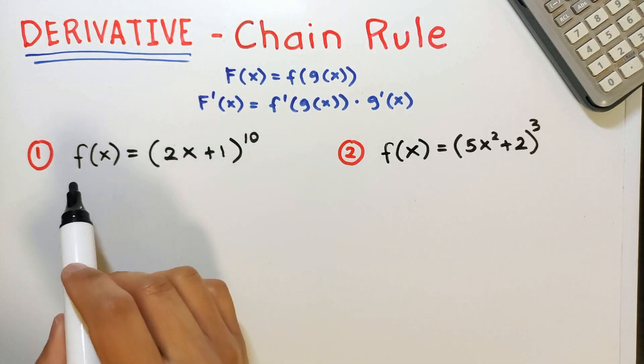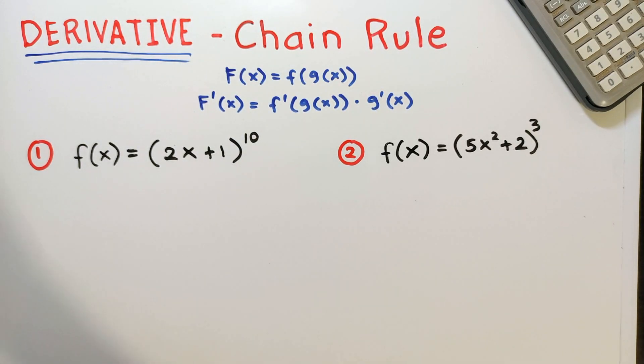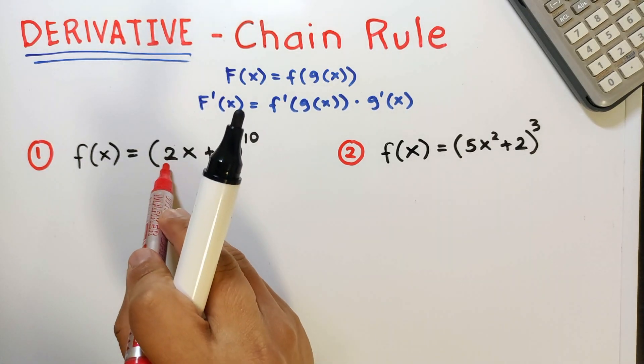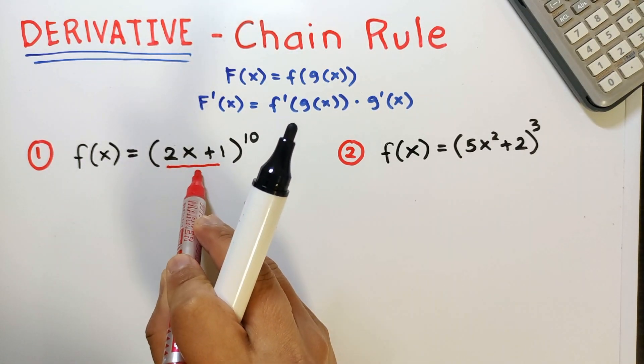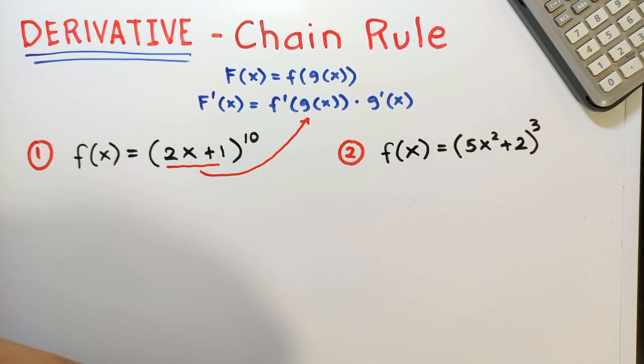Example: f of x equals 2x plus 1 raised to 10. In this example, the inner function is 2x plus 1, so this is equivalent to g in our formula.